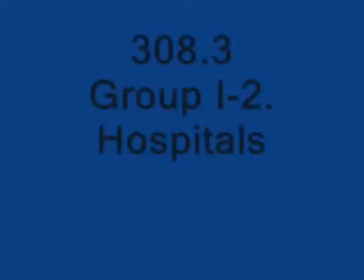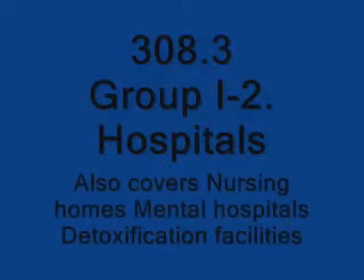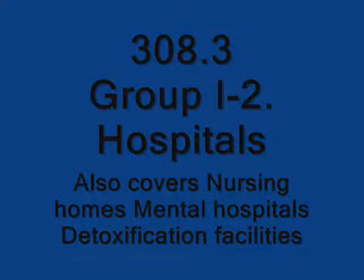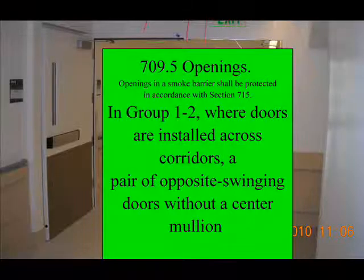There you have it. Where does it come from? The description of Group I2 is in section 308.3, which also covers nursing homes, mental hospitals, and detoxification facilities.